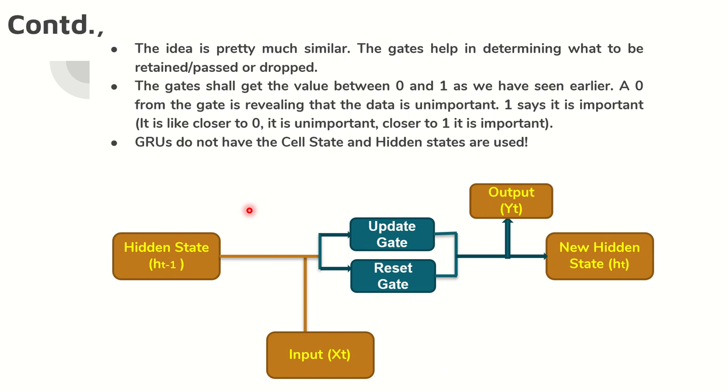The two gates that are going to be deployed and used here are reset gate and update gate. The idea is almost the same that we followed in the LSTM. So what is the purpose of gate? The gate will help you in determining what has to be retained or passed or dropped. The gate will get you after the calculation, after the sigmoid or after the tanh or after mathematical calculation, it will get you the result as 0, 1, or in between 0 and 1 as well. If it is very close to 0, it has to be dropped. If it is close to 1, it can be retained. The same is the case that we are following through this session as well and GRU is following the same gating fundamentals.